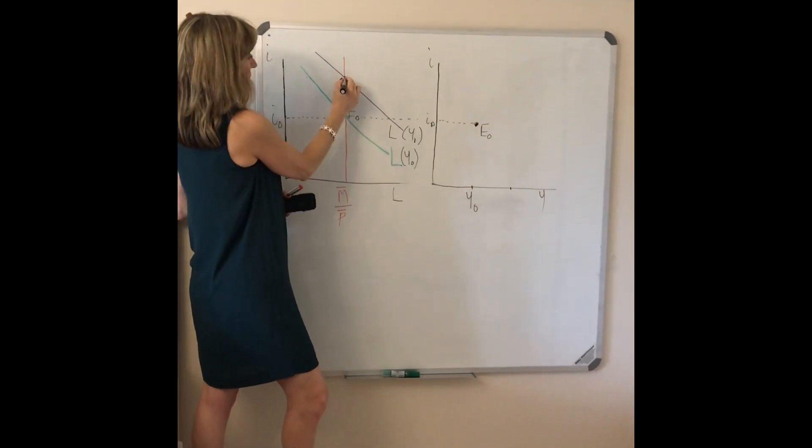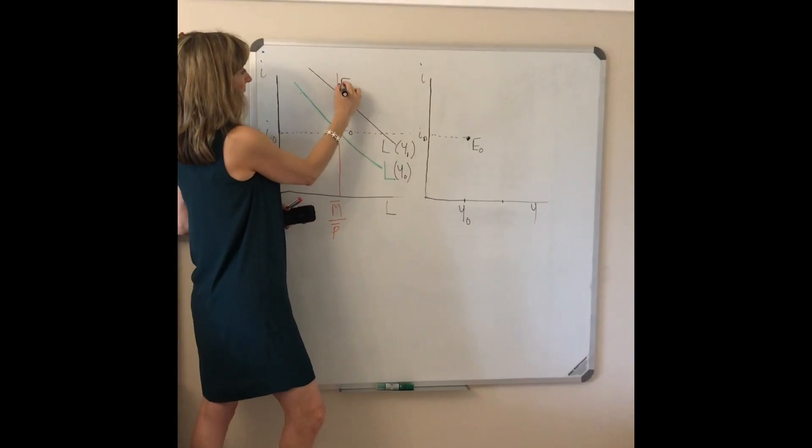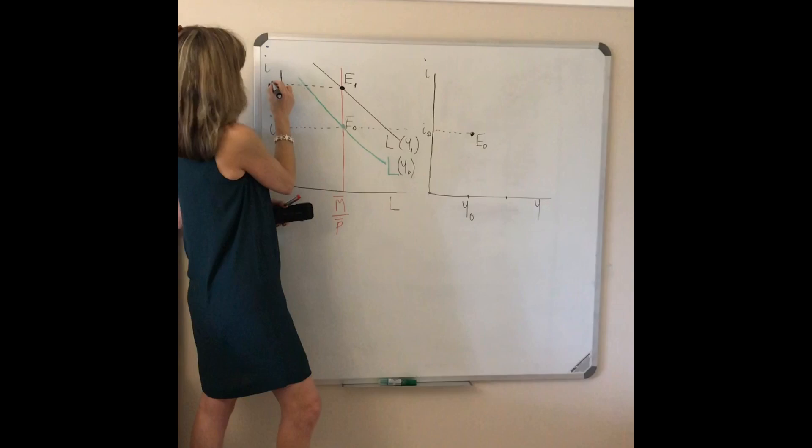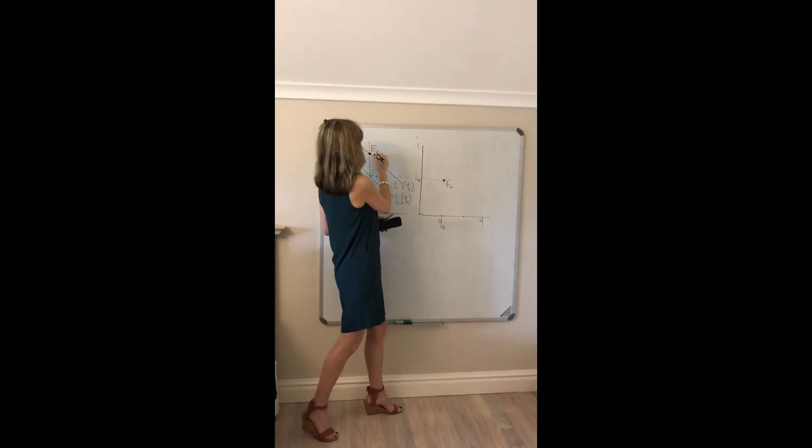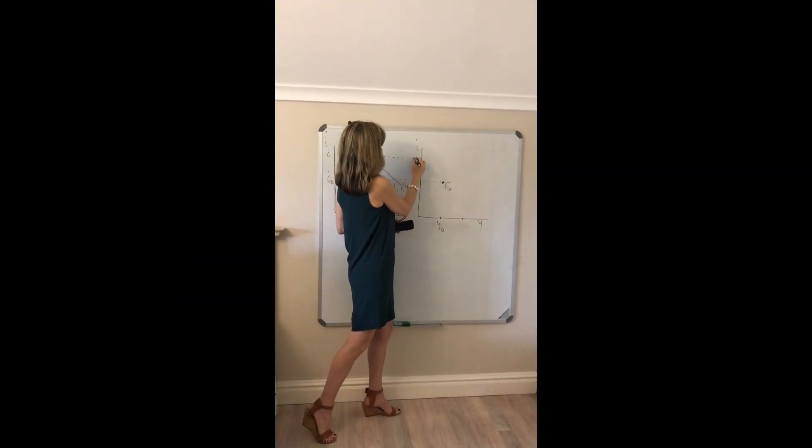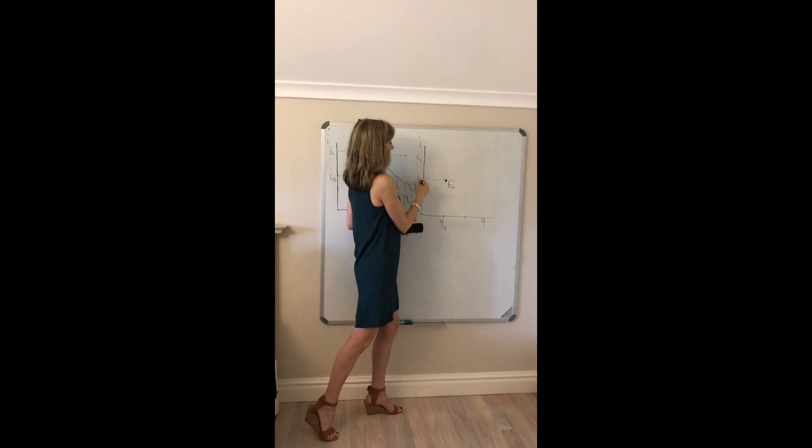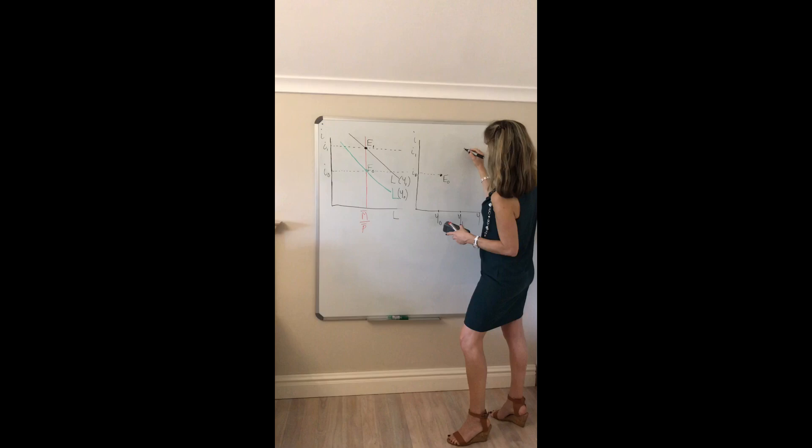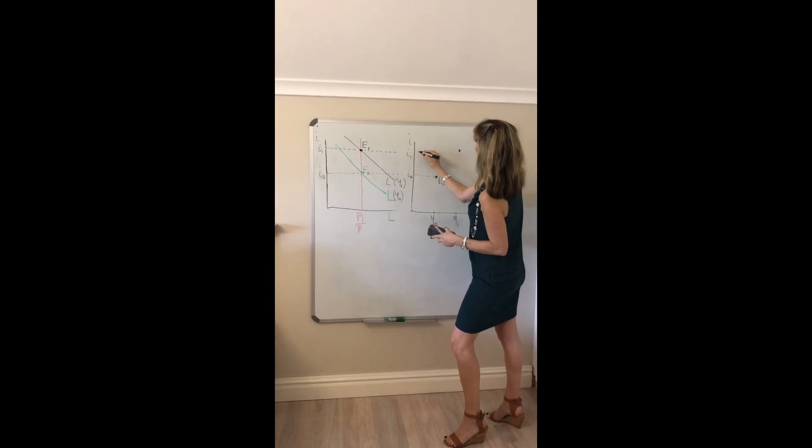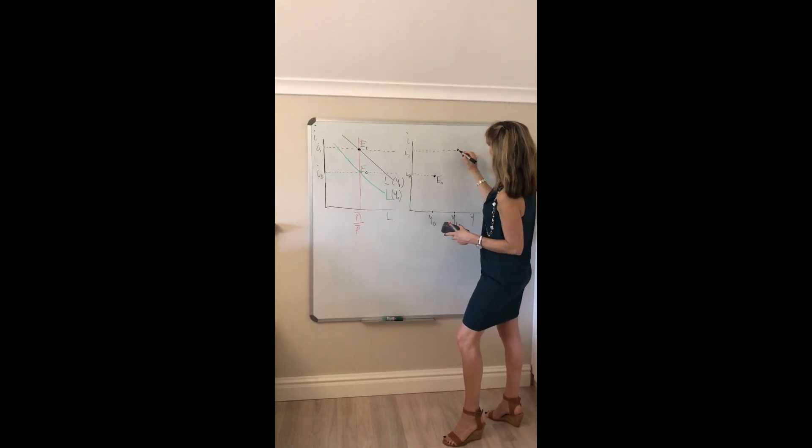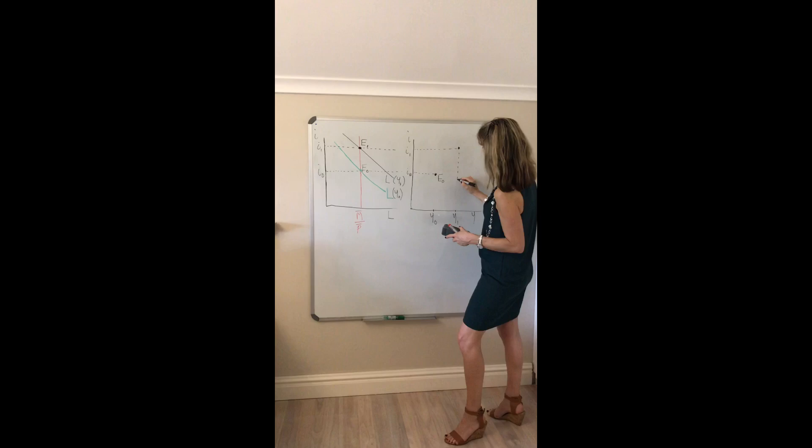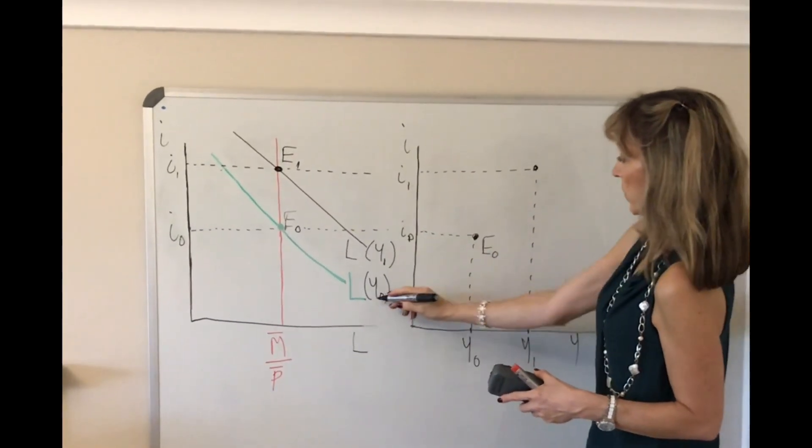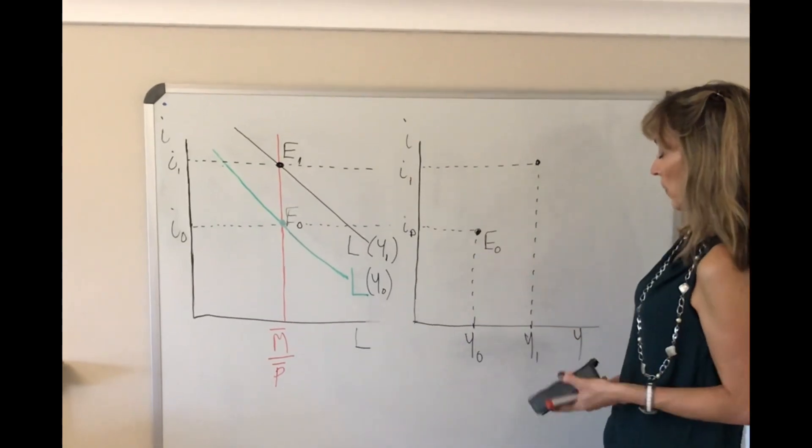So income's risen and in the process we get a new equilibrium at a higher rate of interest, I1. We can therefore trace that across so we see that at an interest rate of I1 we have a higher level of income, whereas before at an interest rate of I0 it was associated with income level Y0.